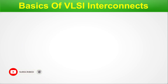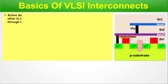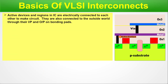Basics of VLSI interconnects. In an IC or integrated circuit, active devices and regions are electrically connected to each other to make a circuit. When these active regions or devices are isolated, they cannot work as a circuit. So they need to be connected, and that connection is called interconnects.